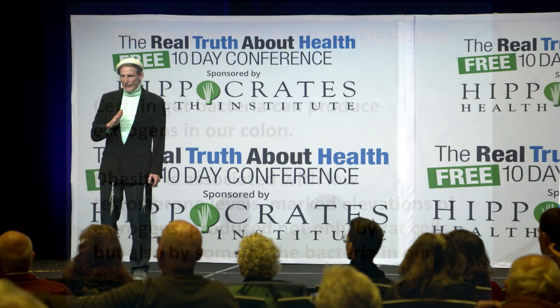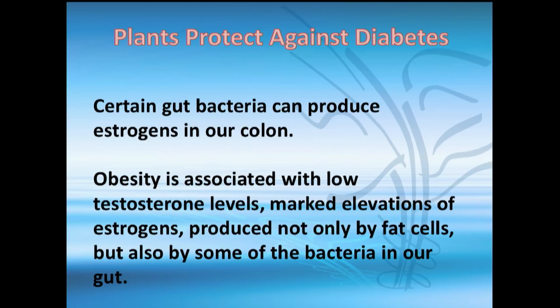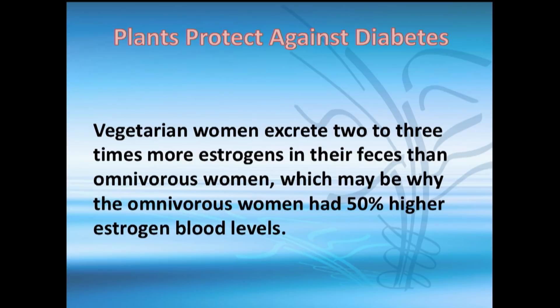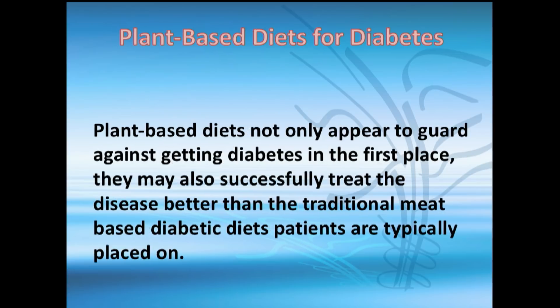Fiber and certain gut bacteria that produce estrogens are important considerations — we need to eat in a way that doesn't promote that. Vegetarian women have two to three times more estrogen in their feces, meaning they excrete estrogen better, partly because of the higher fiber diet. We get much better results preventing and treating diabetes with a vegan diet.